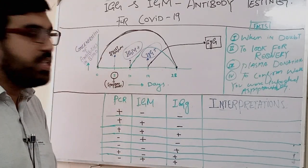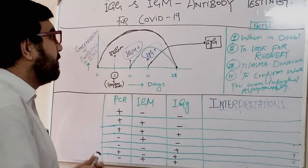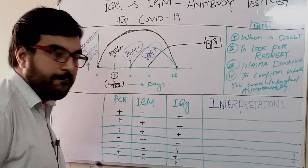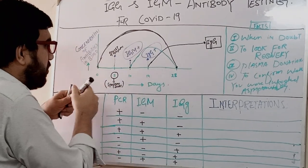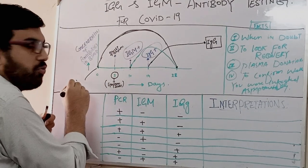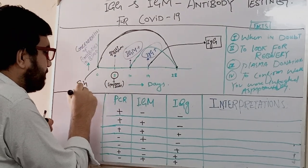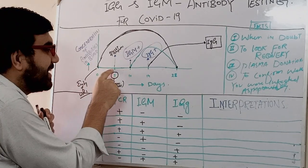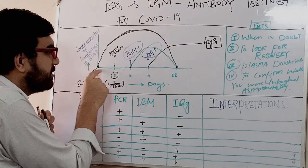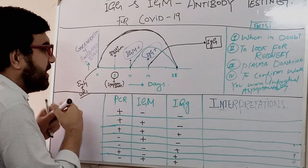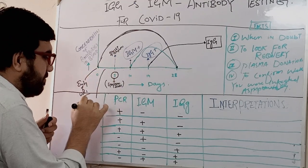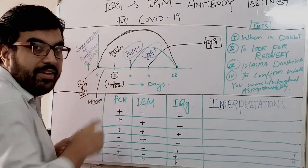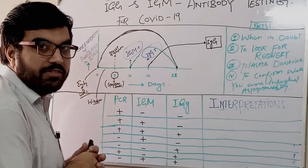First, let's talk about the natural history of COVID-19. This is the 28-day cycle. This marks the entry of the virus into the body. During the first five days, the person is asymptomatic — this is known as the window period. On the fifth day, onset of symptoms begins.